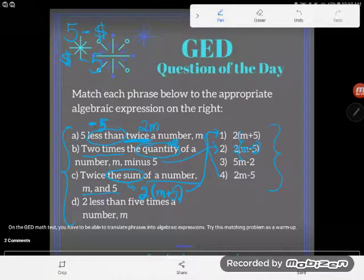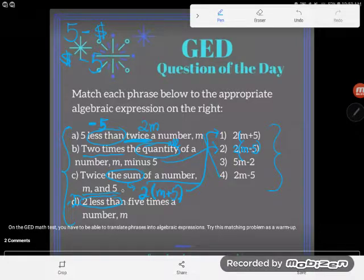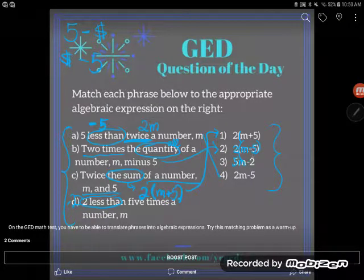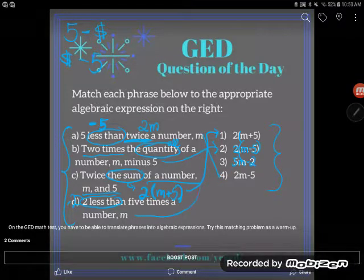So I hope D matches with three. Let's make sure. So D says two less than five times the number M. Again, two less than means I'm going to have to subtract two from whatever the rest of the problem says. So what does the rest of the problem say? It says five times the number M, five times M. So yes, of course. There's my five M and there's two less than that. There's two less than five times the number M. D certainly does match with three.